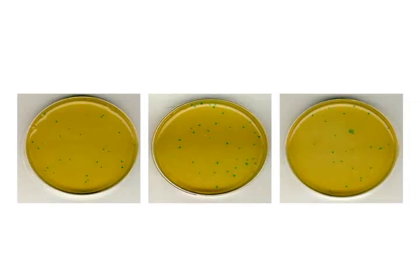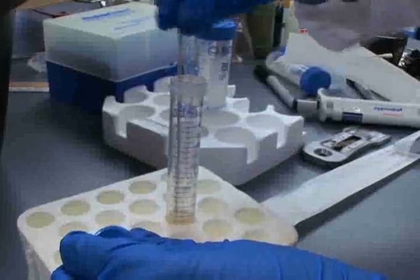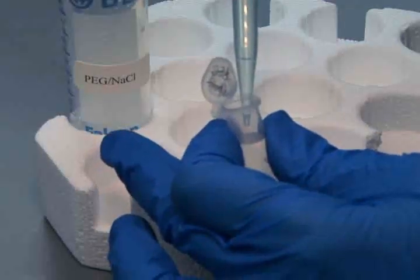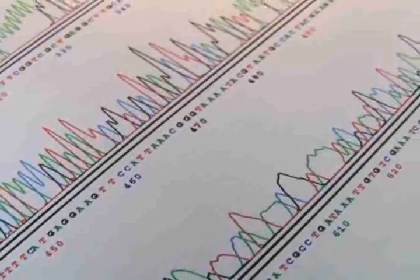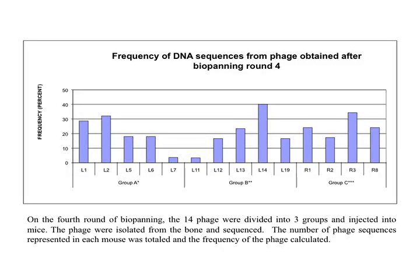Plaque the phage onto plates to determine the plaque forming units of the amplified eluates. Repeat the in vivo biopanning procedure for both the eluted and non-eluted phage four times. Amplify pooled phage in bacterial cultures. Purify and quantify the DNA. Sequence the final phage DNA using the 98 primer provided with the phage display kit. Importantly, calculate the frequency of phage DNA sequence representation. Now synthesize peptides incorporating a glycine-glycine-glycine-serine-lysine sequence.